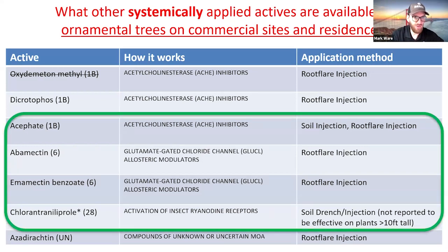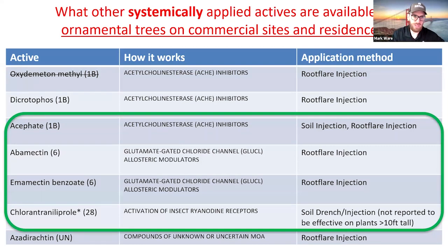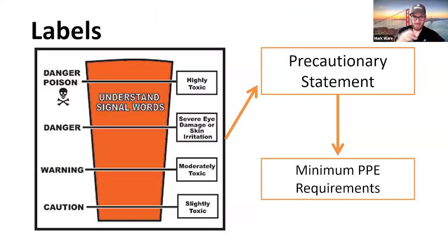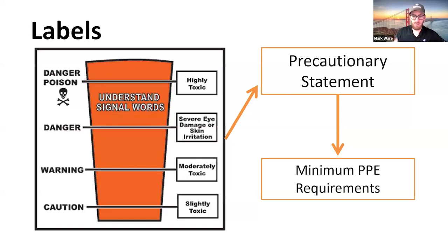We're going to start talking about some of our systemic alternatives. We're going to focus primarily on these four: acephate, abamectin, emamectin benzoate, and chlorantraniliprole. We'll talk about chlorantraniliprole a little bit — there's an asterisk there and I'll explain why in a bit. The reason we're not focused on some of the other products on the chart is because some are organophosphates. I included a couple of alternatives because some of you may be familiar with them, and it brings up an important concept around toxicity and risk.